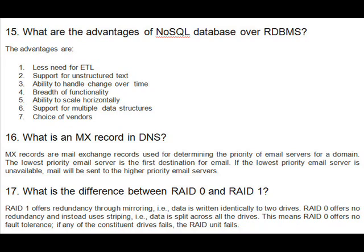Question 17: What is the difference between RAID 0 and RAID 1? RAID 1 offers redundancy through mirroring — data is written identically to two drives. RAID 0 offers no redundancy and instead uses striping, meaning data is split across all the drives. This means RAID 0 offers no fault tolerance; if any of the constituent drives fails, the RAID unit fails.